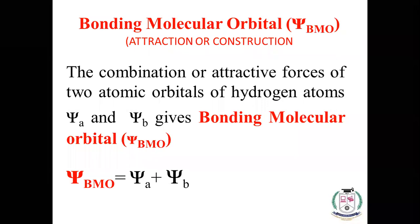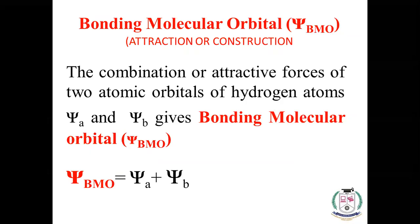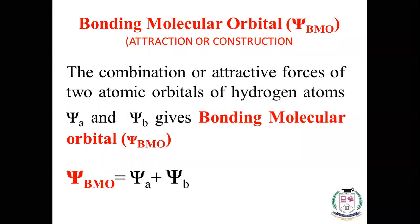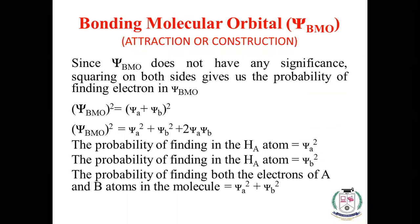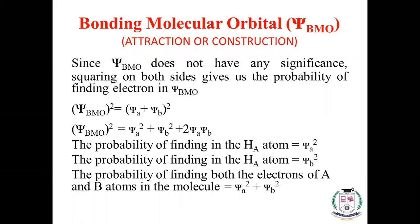Mathematically, we explain bonding and anti-bonding molecular orbitals as follows. Due to attraction forces, when two atomic orbitals of hydrogen atoms combine, bonding molecular orbital forms. Mathematically: psi BMO = psi A + psi B. We know that psi BMO alone gives no information — psi squared gives us information. So we square psi BMO: (psi A + psi B)² = psi A² + psi B² + 2·psi A·psi B.